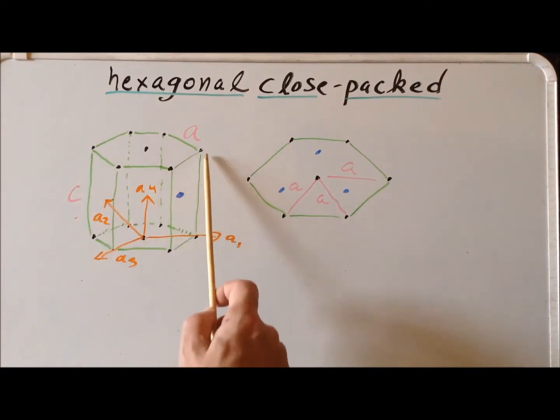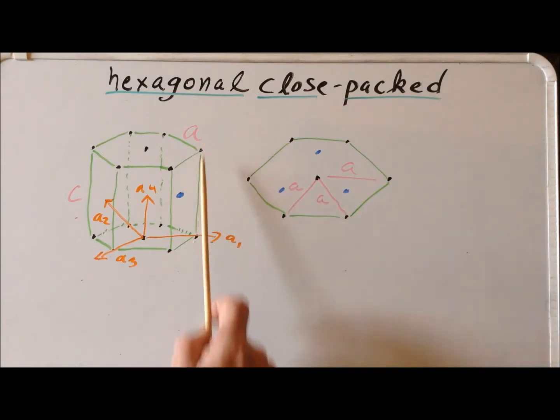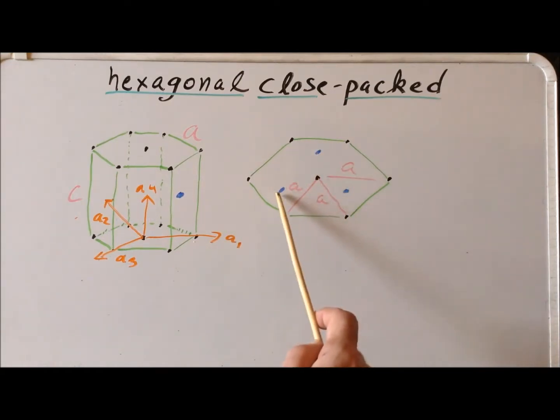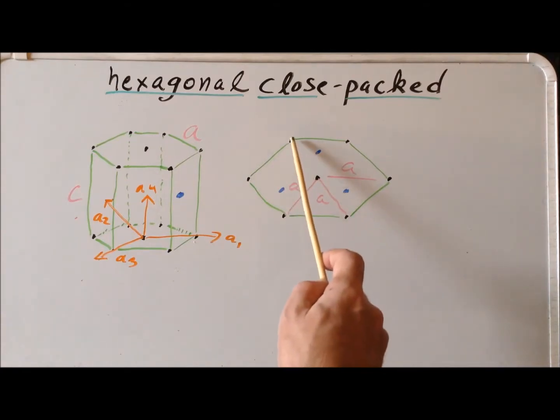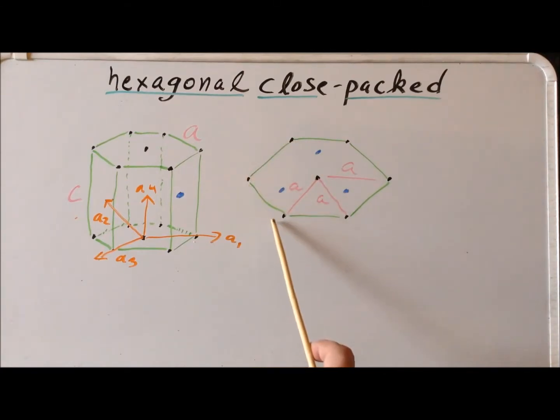Well, since the height of this prism from one layer to the next is C, and we know that this atom is exactly halfway in between, its height above the bottom plane must be one-half of C. So C over 2 height for these, whereas the height is 0 or C for the black atoms.